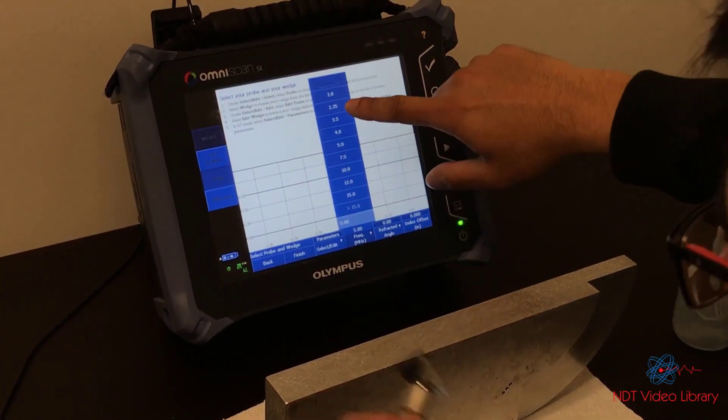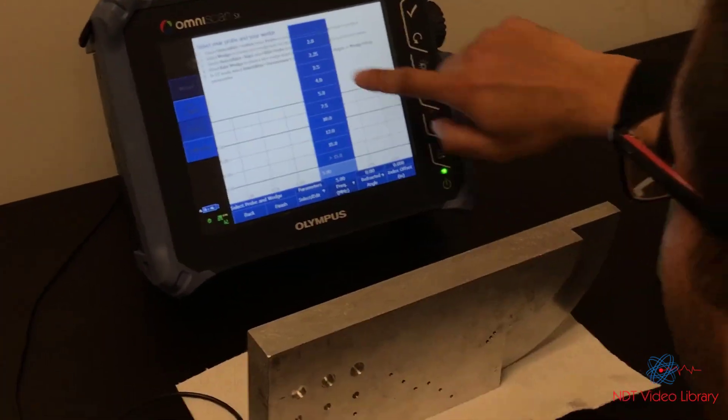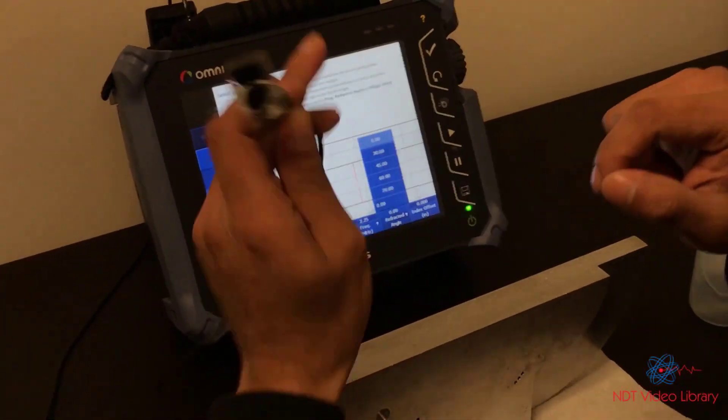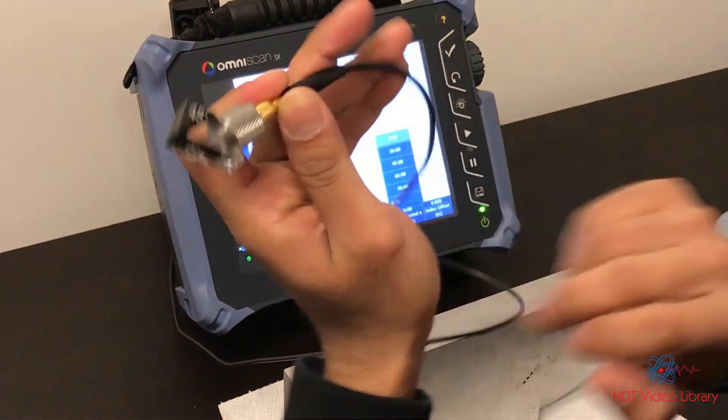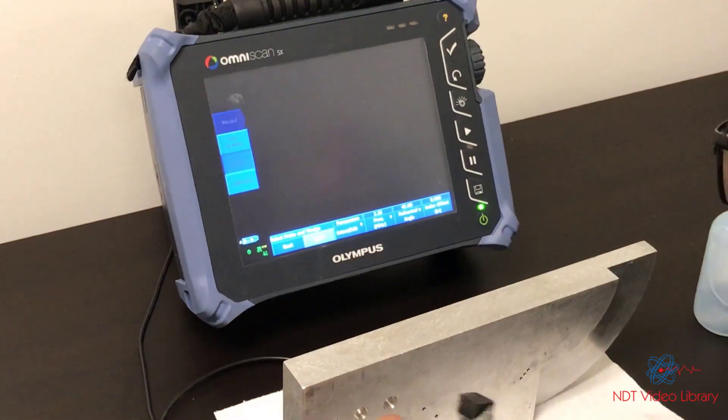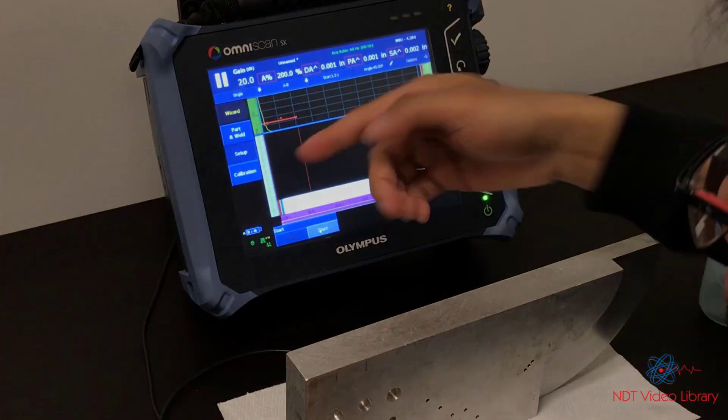Frequency is 2.25. And then the angle is on the wedge. Let's say it's 45. Finish. So that's my setup and now I can move on to calibration.